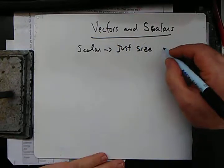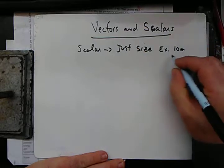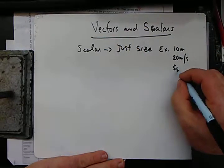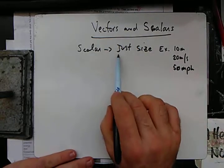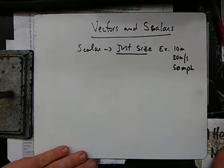So like a scalar might be, example, might be like 10 meters, or 20 meters a second, or 50 miles per hour. That's a scalar, it's just the size of it. It's not telling you anything about the direction or anything like that.